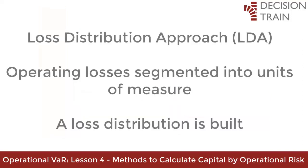With LDA, a financial institution first segments operating losses into homogeneous segments called units of measure. For each unit of measure, the bank then constructs a loss distribution that represents its expectation of total losses that can materialize over a one-year horizon.